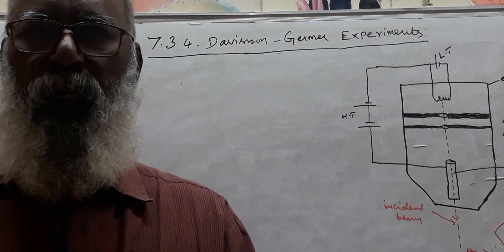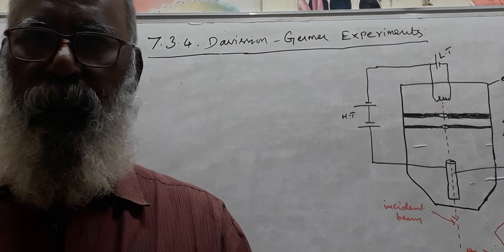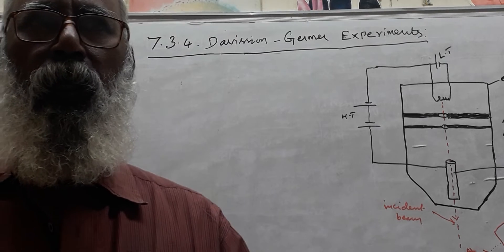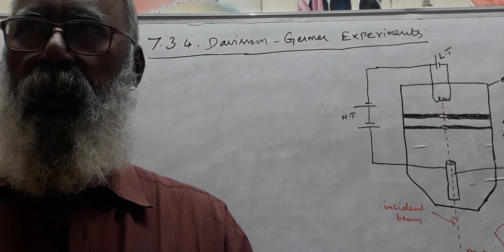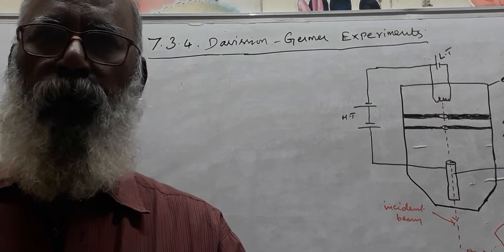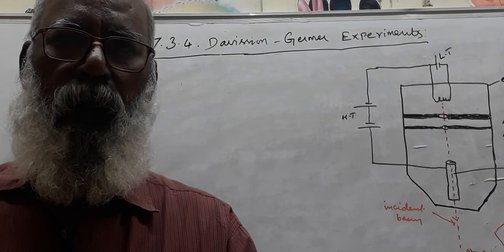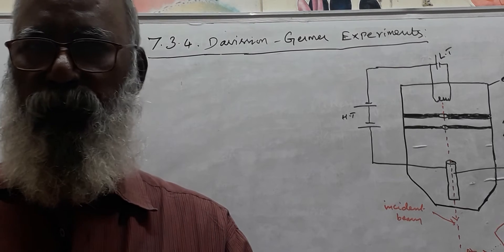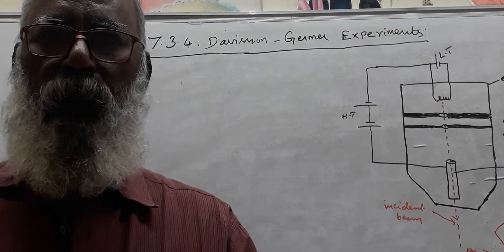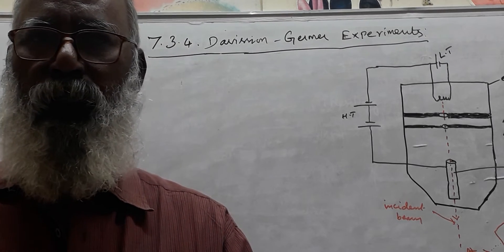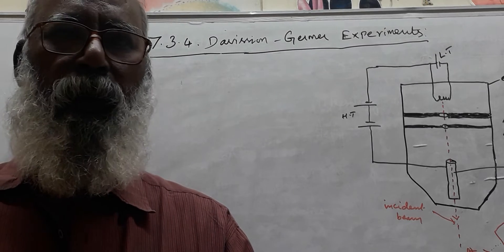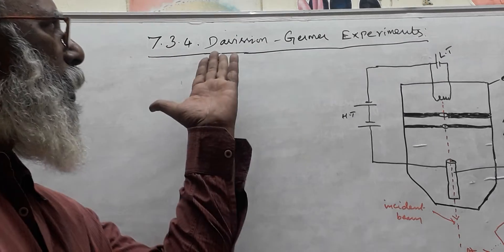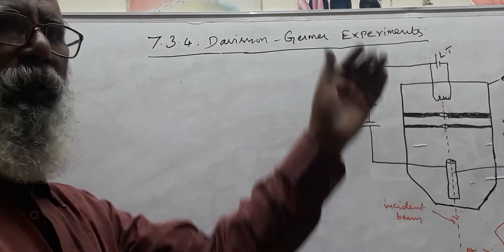This experiment was conducted in 1927. Before that, a famous scientist Louis de Broglie invented the concept of matter waves. Matter waves were suggested by Louis de Broglie, and experimentally, Davisson and Germer proved them.